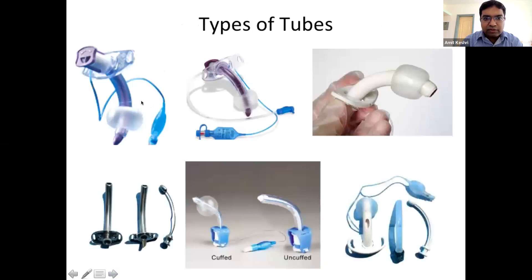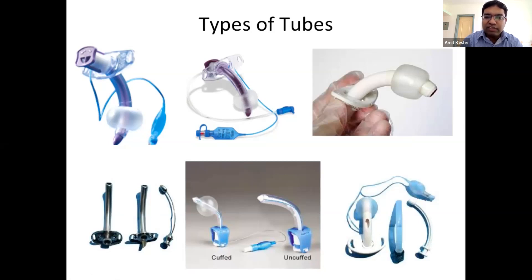The standard tube is used most of the time, but if there are secretions, a tube with a suction channel is available — you connect suction continuously or on demand without needing to suction through the tube itself. Silicone tubes are used for longer-term tracheostomy. Metallic tubes are used for long-term cases; they have outer and inner tubes that can be cleaned easily under tap water.